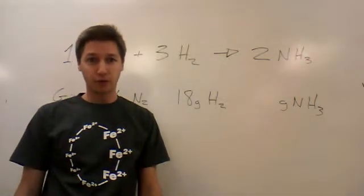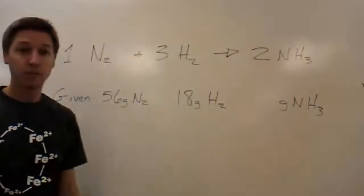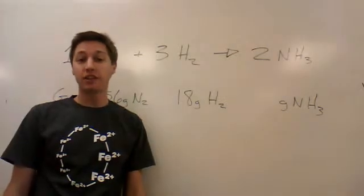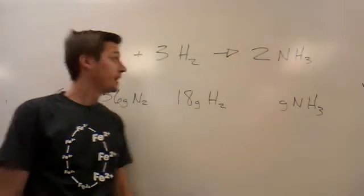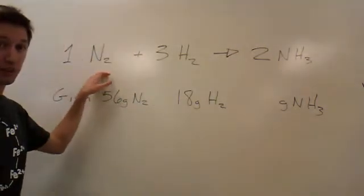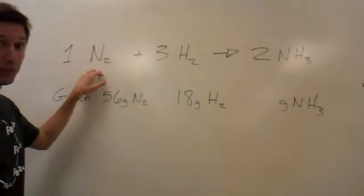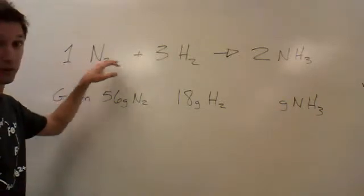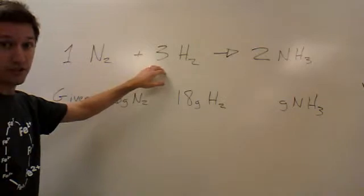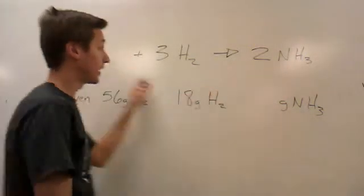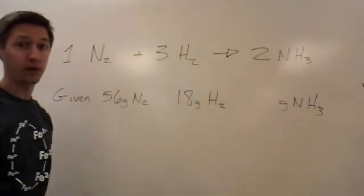I'm going to solve a stoichiometry problem for you here. Stoichiometry deals with how much you can make from a chemical recipe. Here's our chemical recipe we're going to use for practice. We have a nitrogen gas molecule reacting with three hydrogen gas molecules to make two ammonias. This is our given chemical reaction.